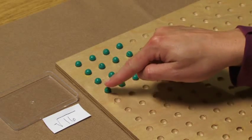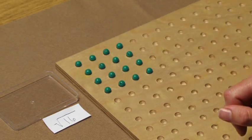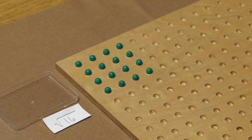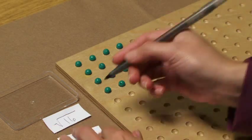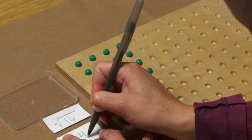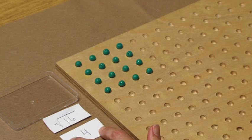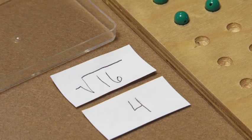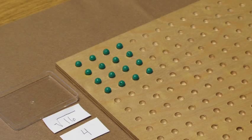So that tells us that our square root of 16 is 4, and I would have the students practice this with lots of different numbers.